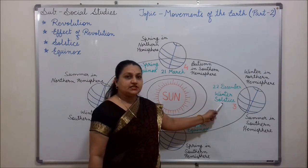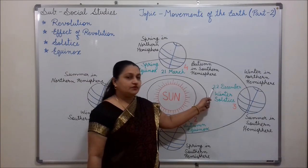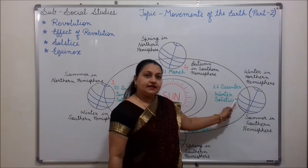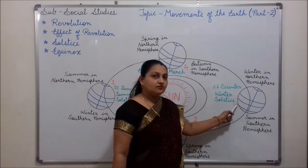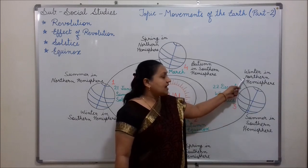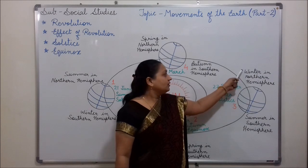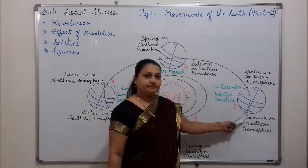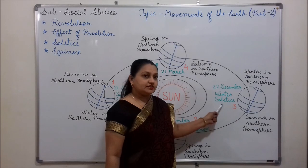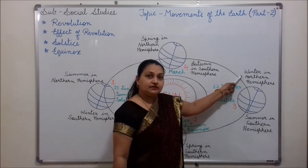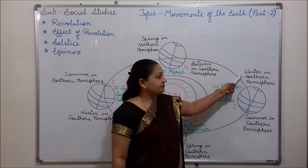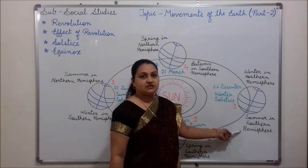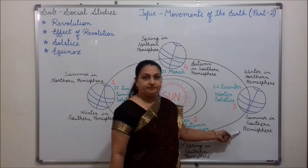Now, winter solstice. It falls on 22nd December. On this day, the sun rays fall vertically on the Tropic of Capricorn, and the northern hemisphere experiences winter season while the southern hemisphere experiences summer season. During winter solstice, the duration of the day is shortest in the northern hemisphere, while in the southern hemisphere it experiences the longest duration of day.